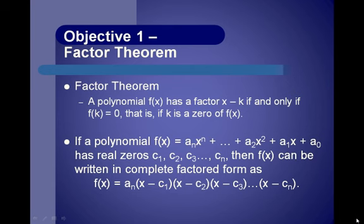This is like what we did back in synthetic division earlier. If we were dividing by x minus 3, then we did synthetic division by 3. If when we did synthetic division by 3 the remainder was 0, then we went back and said that x minus 3 was a factor.